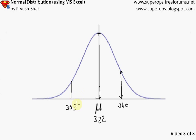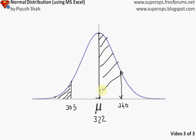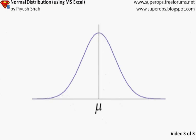In most cases we do not use normal distribution to find point probabilities — like the probability of exactly 305 units demanded. We use it for interval probabilities: what is the probability that less than 305 units were demanded, or between 322 and 340 units. We can use tables or Excel to solve these.